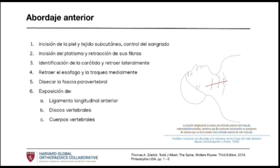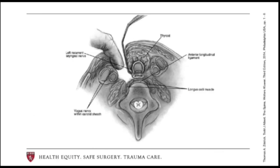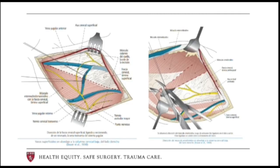We find ourselves at the anterior longitudinal ligament, the vertebral disc, and the vertebral bodies. We are able to distinguish the vertebral discs because they are like small anterior protrusions that give us the margins to identify the intervertebral space. Here in this image we see anatomical references to consider such as the angle of the jaw, the infrahyoid and suprahyoid muscles, the platysma, the sternocleidomastoids, and the vessels that we must respect.